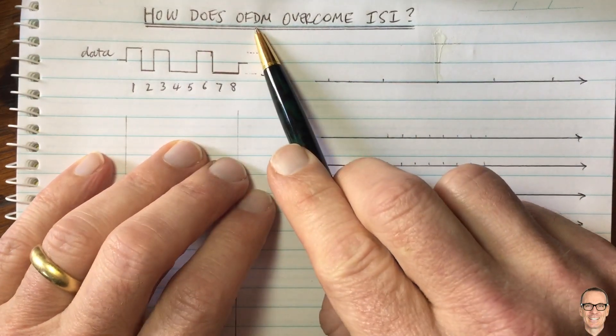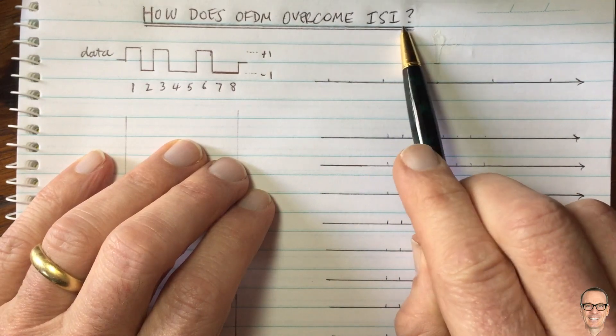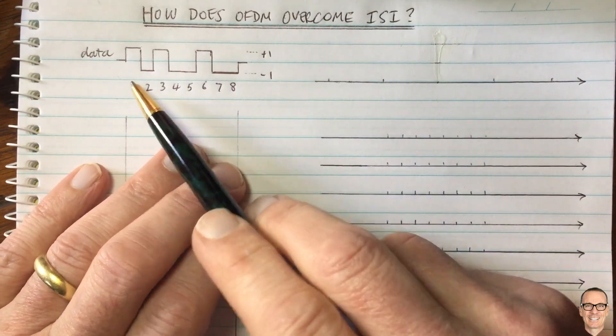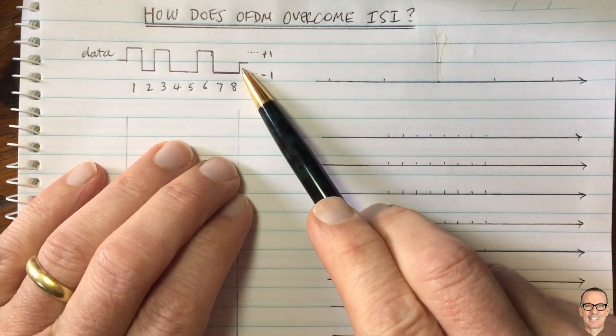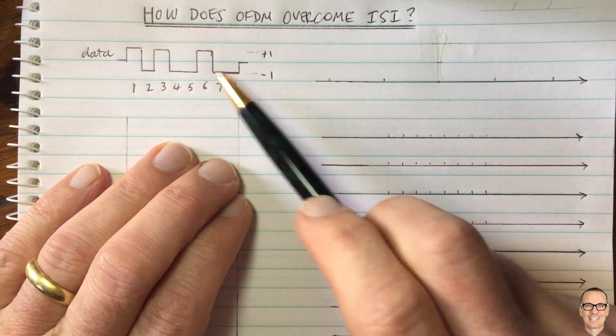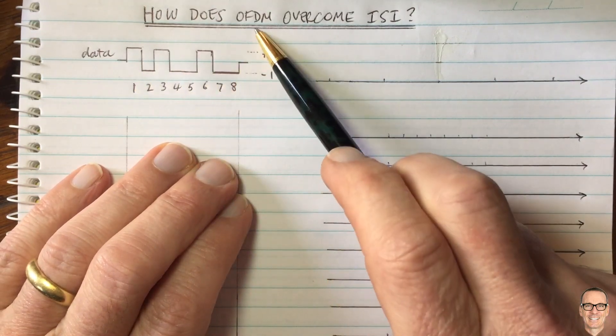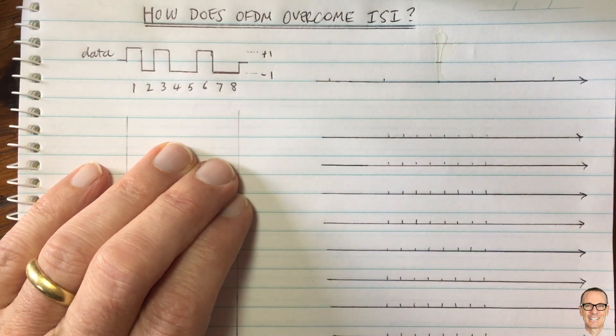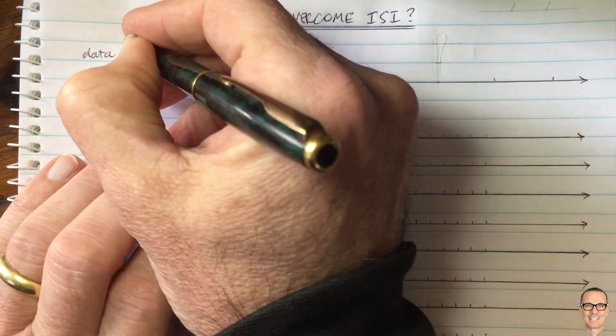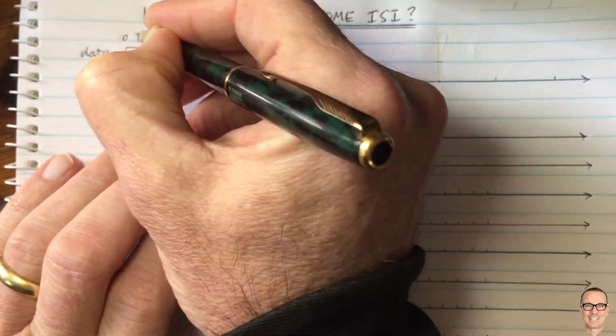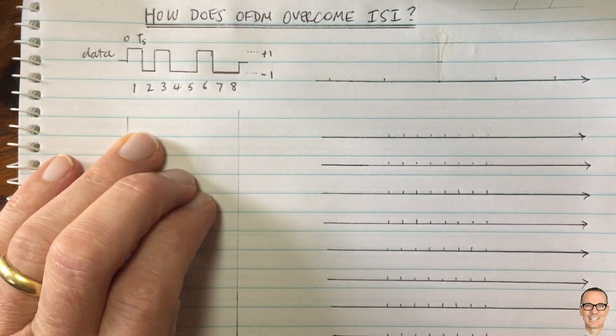So how does OFDM overcome inter-symbol interference? Let's look at this data stream. If we transmitted this data stream exactly as it was without using OFDM, then our symbols would last for, let's say, TS. We'll call it TS for a symbol.